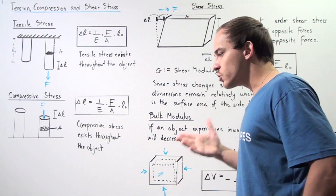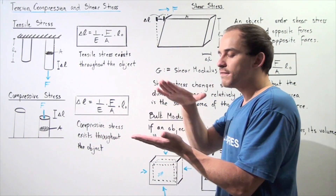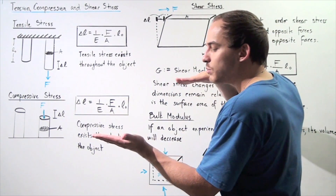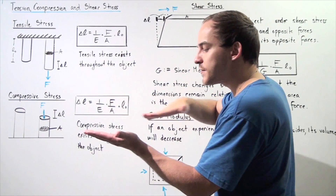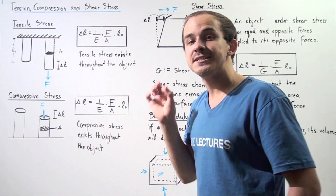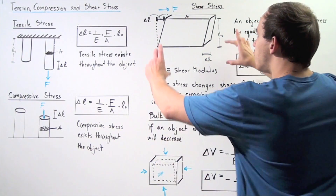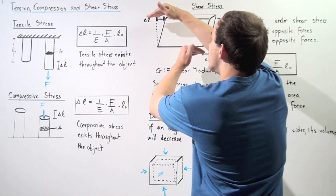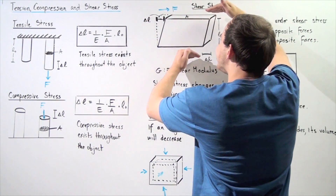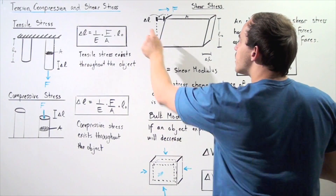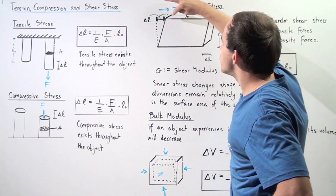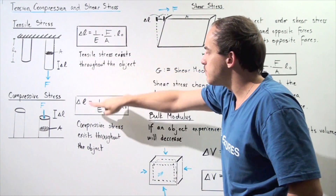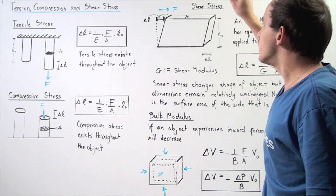Now let's talk about shear stress. Let's suppose we take a book that is resting flat on the ground — the shape of that book is a rectangle. If we take our hand and apply a force onto the top surface area of that book, that book will experience shear stress. Let's suppose we applied a force parallel to the ground. The book's shape will slightly shift in that direction, and the change in L — the horizontal distance this corner of our book travels — is the change in L for shear stress.